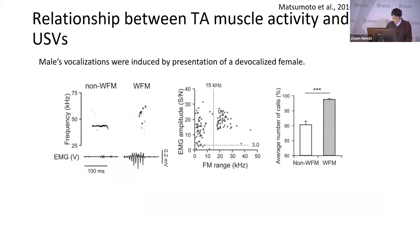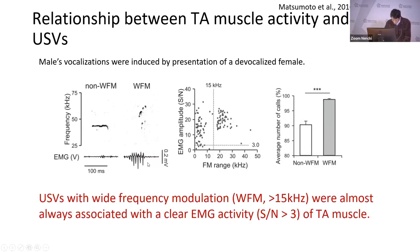First, we checked the relationship between EMG and USVs. The data was obtained during interaction of a male and devocalized female rat to make sure the male subject was the source. What we found was that EMG activity was not always observed, especially in non-frequency-modulated calls, while nearly 99% of frequency-modulated calls were associated with clear EMG activity. So we could identify the source of frequency-modulated calls using EMG activity.